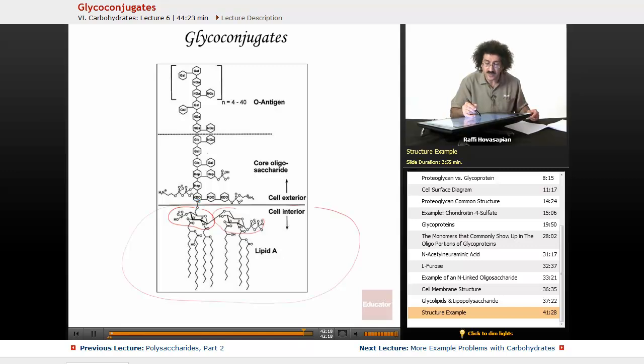This is going to be outside the cell. This part is the core oligosaccharide, so this part is always the same. This particular arrangement - KDO, HEP, HEP, GLC, GAL, GLC, NGC - this oligosaccharide arrangement is always going to be the same. These are just different monomers, different types of sugars with different things attached to them.